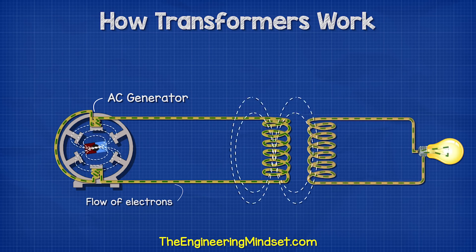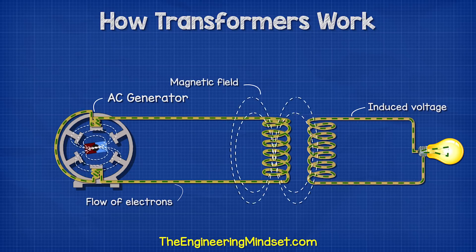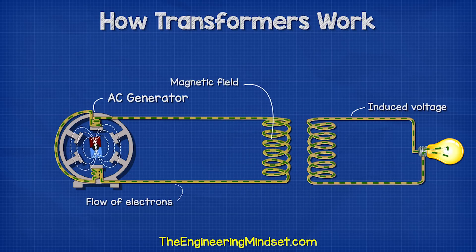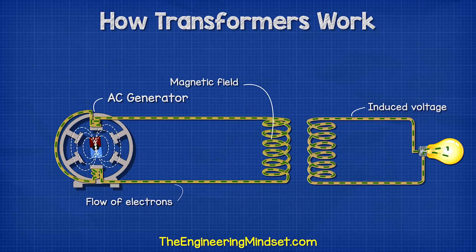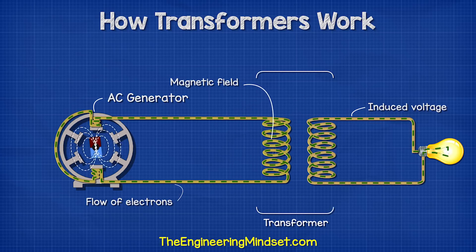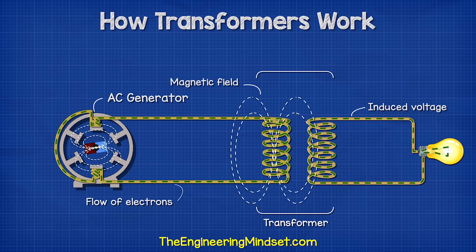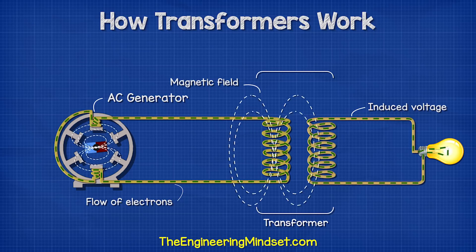If we place a second coil of wire in close proximity to the first coil, then the magnetic field will induce a voltage into this second coil, because this magnetic field is going to push and pull the electrons in the second coil, forcing them to move. This is therefore a transformer.